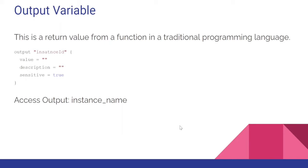The second type of variable is the output variable, which is like a return value from a function in traditional programming. The syntax is very similar to the input variable - the only difference is the keyword and some blocks are missing. Output is used when you want some information from your set of execution or from resources. You write the 'output' keyword, then the name of the output variable, and inside the block there are three parameters: value, description, and sensitive.